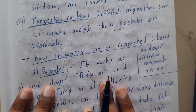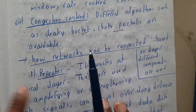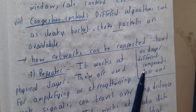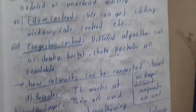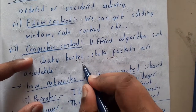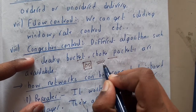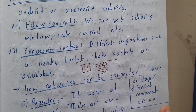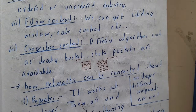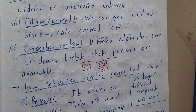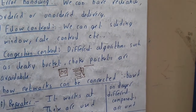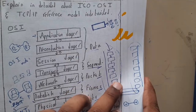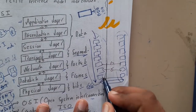Now the question is: how do we connect networks and what devices help? Networks can be connected based on layers, and different components are used at different layers. In the OSI model we have seven layers. The bottom three or four layers handle the actual connection between sender and receiver sides, and devices operating at those layers help establish the network.